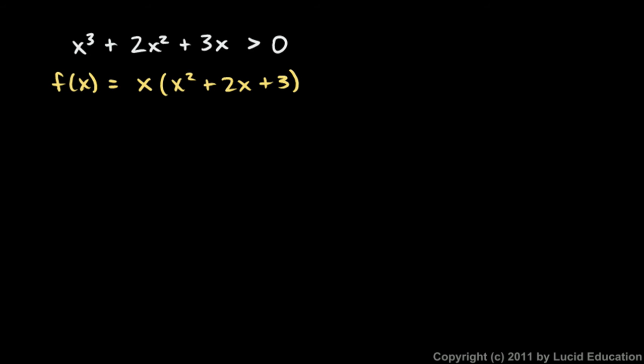All the x values that will give us a value of the function there greater than 0. This piece right here is a quadratic. So that doesn't factor nicely, but we can still find the zeros of the quadratic, and we'll do that with the quadratic formula.